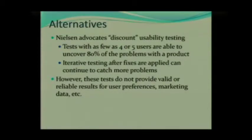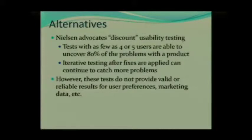Nielsen came out with what he calls discount usability testing, and that's actually what we are going to be doing in this class. Discount usability testing doesn't have these large sample sizes — you can have a test with as few as four or five participants. Because what Nielsen found through his research is that with as few as four or five users, you are able to uncover 80% of the problems with a product. That's a pretty high percentage for having such a small N.